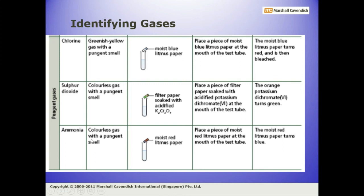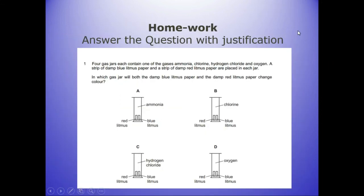So these are the six gases that are very important because their tests and their observations are asked in the exams. You have to learn the six gases: hydrogen, oxygen, carbon dioxide, chlorine, sulfur dioxide, and ammonia. You have to learn their color, their odor if there is any, and their test and its observation. The homework is you have to memorize the table, memorize the test of identification of gas, and then you have to answer this question with justification.